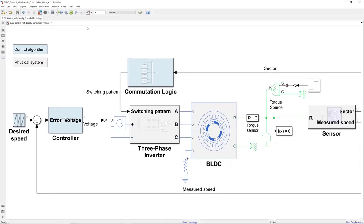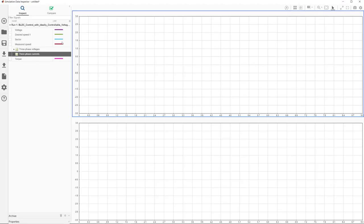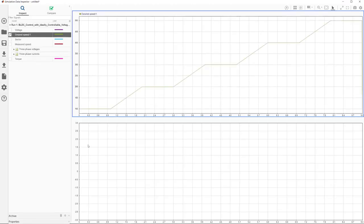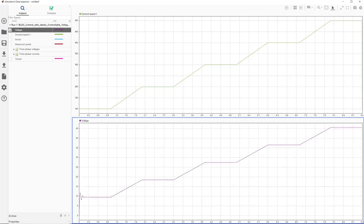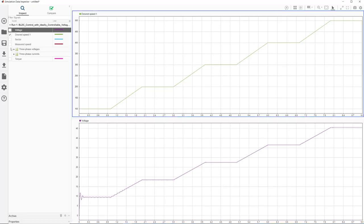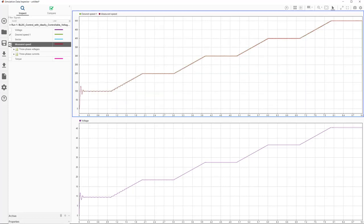This model logs signals such as speed, voltage, current, and torque. To explore these, let's run the model and first look at the desired speed. As you see here, it ramps up from 100 to 500 RPM in 100 RPM increments. If we now look at the voltage, we see how it's adjusted by the controller to make the motor rotate at the desired speed as seen on the measured speed.